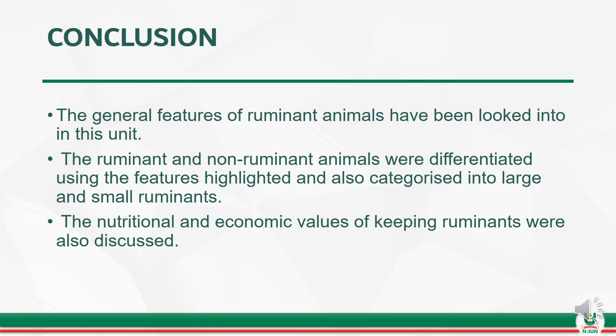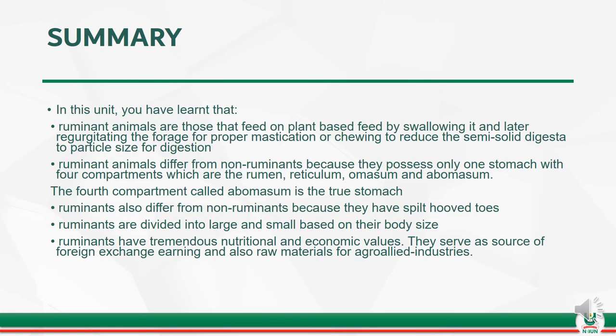In conclusion, the general features of ruminant animals have been looked into in this unit. The ruminant and non-ruminant animals were differentiated using the features highlighted, and also categorized into large and small ruminants. The nutritional and economic values of keeping ruminants were also discussed. In summary, you have learned that ruminant animals are those that feed on plant-based feed by swallowing it and later regurgitating the forage for proper mastication or chewing, to reduce the semi-solid digesta to particle size for digestion.